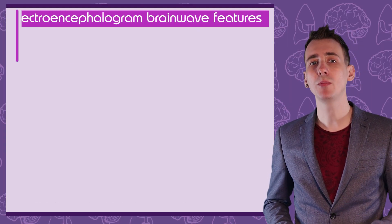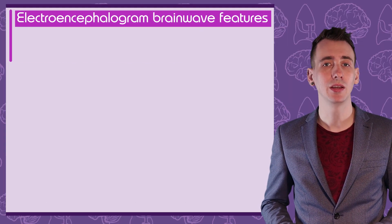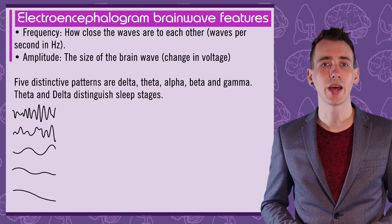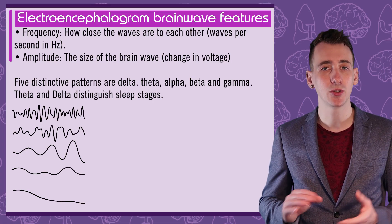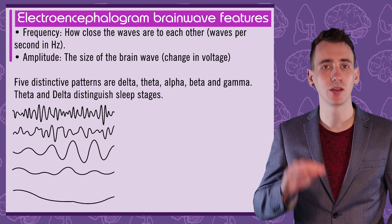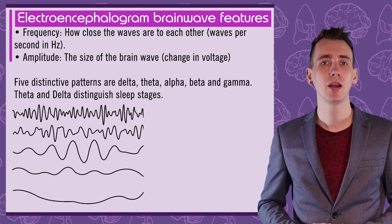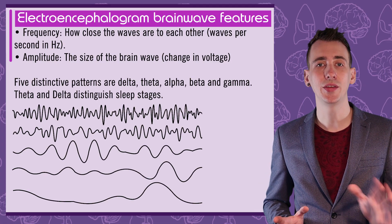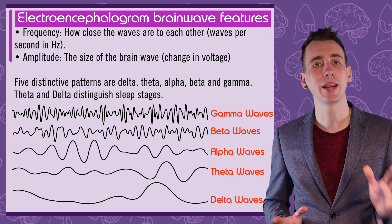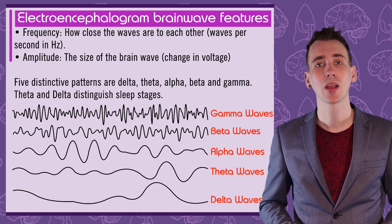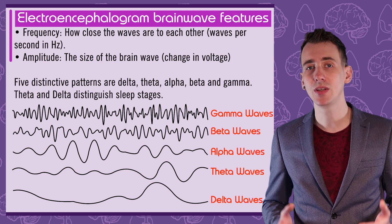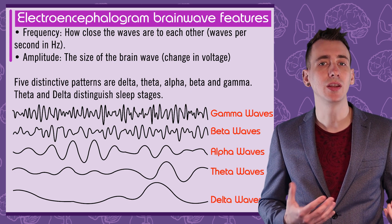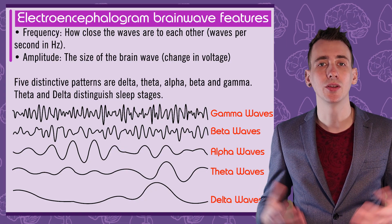When describing brainwaves shown by EEG, the frequency is the number of waves per second, and the amplitude is the size of the wave. The five main distinctive patterns are delta, theta, alpha, beta, and gamma. As sleep becomes deeper, slower patterns like theta and then delta dominate.